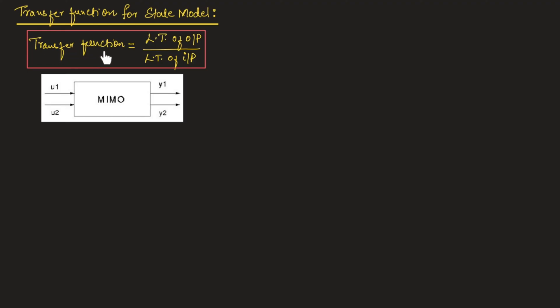Generally, a transfer function can be written as Laplace transform of output divided by Laplace transform of input. If we consider the multiple input-multiple output system, the input is represented by U and the output is represented by Y. So, we can say the transfer function can be obtained by taking Y(S) divided by U(S), where Y(S) is the Laplace transform of output and U(S) is the Laplace transform of input.